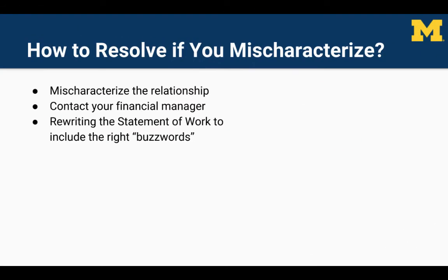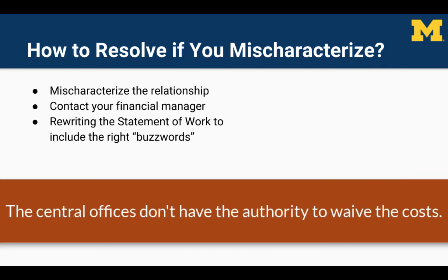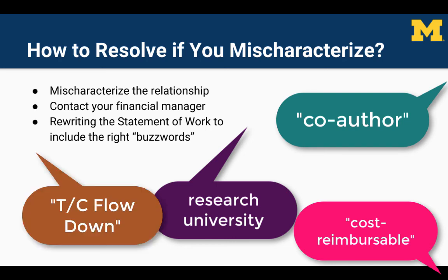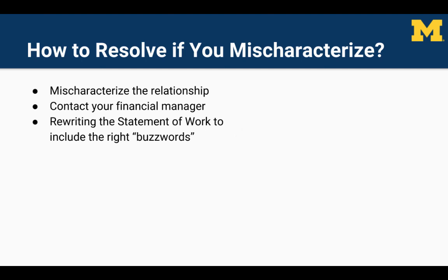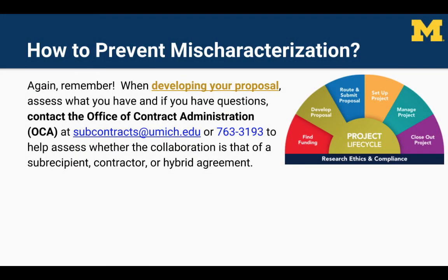If you mischaracterize the collaborative organization, there may be additional costs for your department or sponsor to cover. The deans and major directors at the University of Michigan rely on recovering indirect costs, and nobody in central administration has the authority to waive the charging of any indirect costs. Also, rewriting the statement of work to include buzzwords normally found in a subaward isn't going to change the evaluation. If you mischaracterize the collaborative organization, you will have to visit your unit's financial manager or research dean's office to determine alternatives for correcting the budget's shortfalls. If you are ever uncertain whether a contract should be classified as a subaward or a hybrid at the proposal stage, contact the Office of Contract Administration and someone will be happy to help you make a determination.